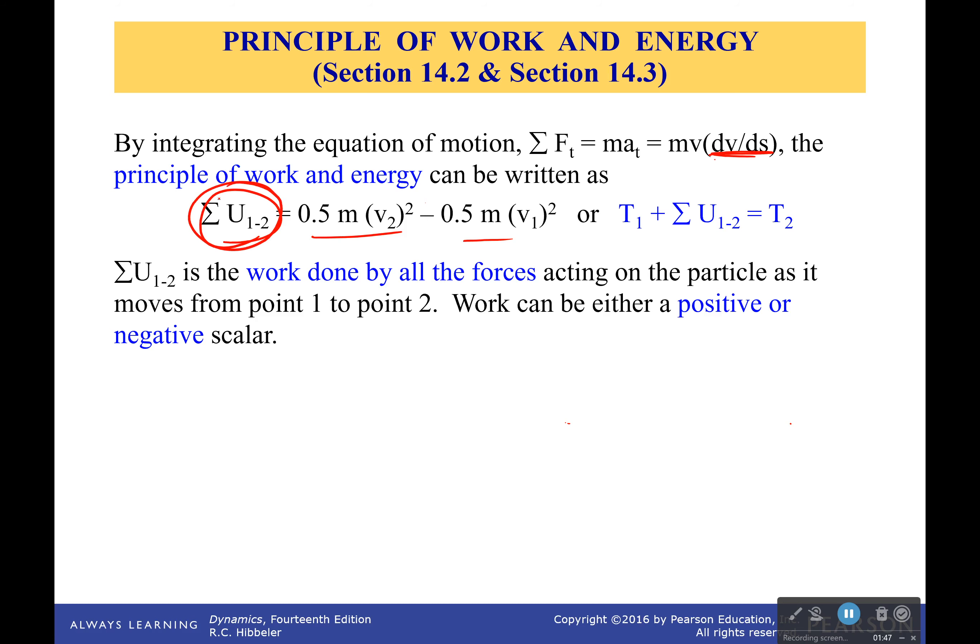Now the sum of work is the work of all forces: the weight, the springs, friction, acting on our body. And it can be either positive or negative. If it's positive, v2 will be greater than v1. If it's negative, v2 will be less than v1.